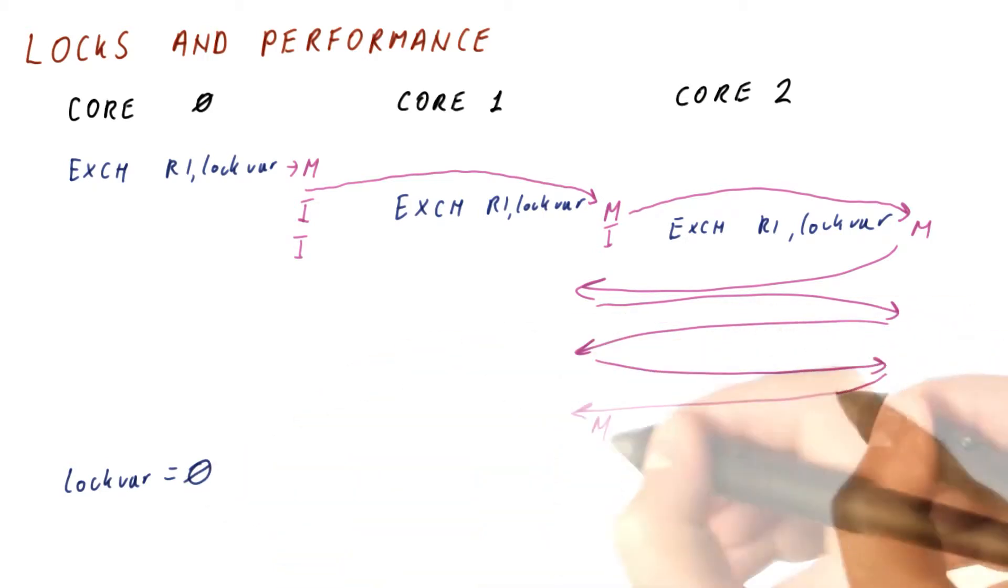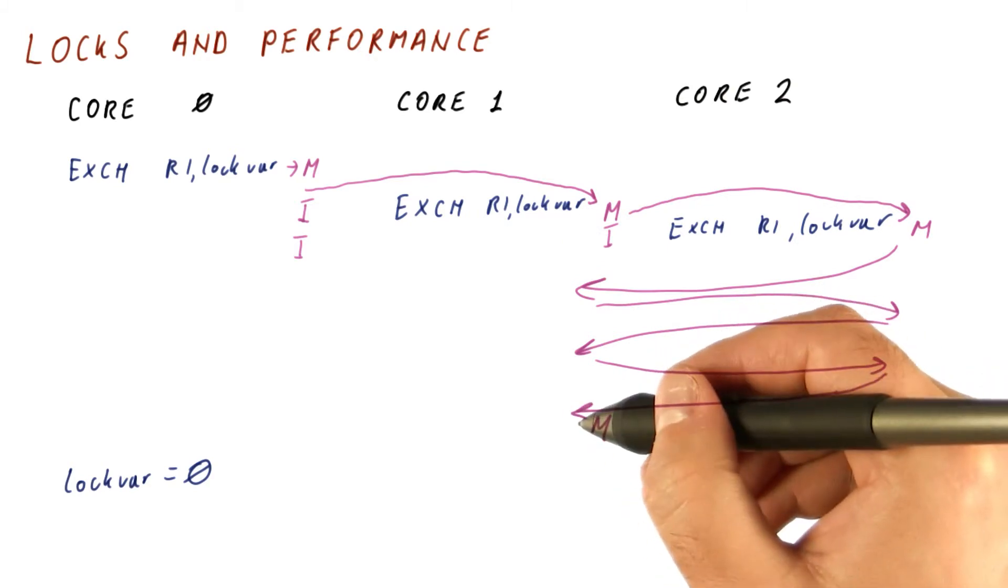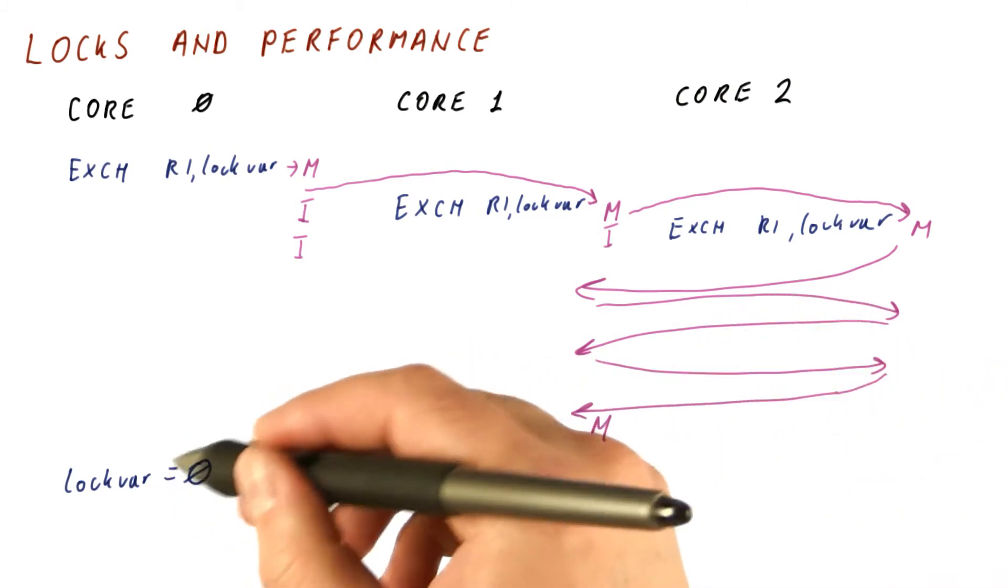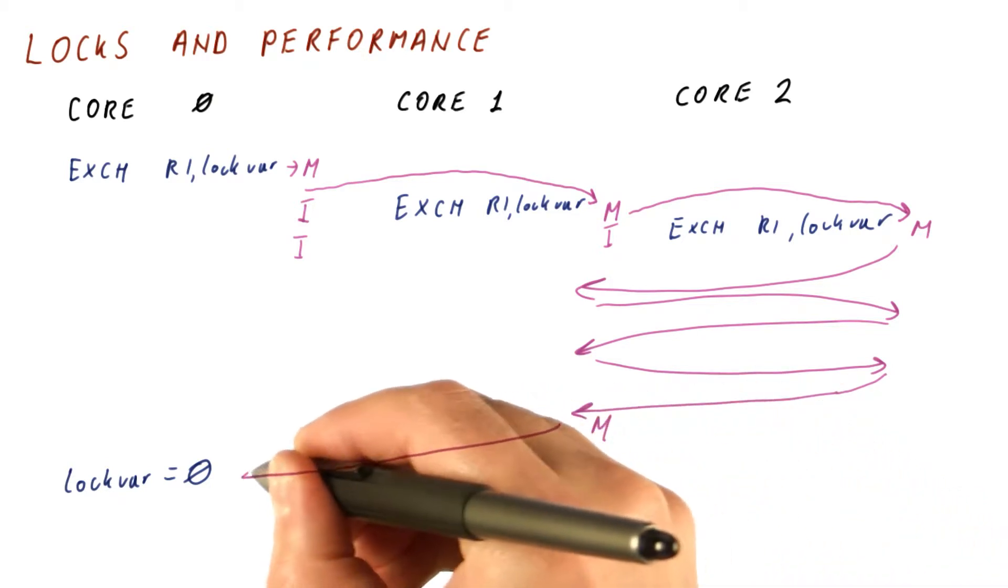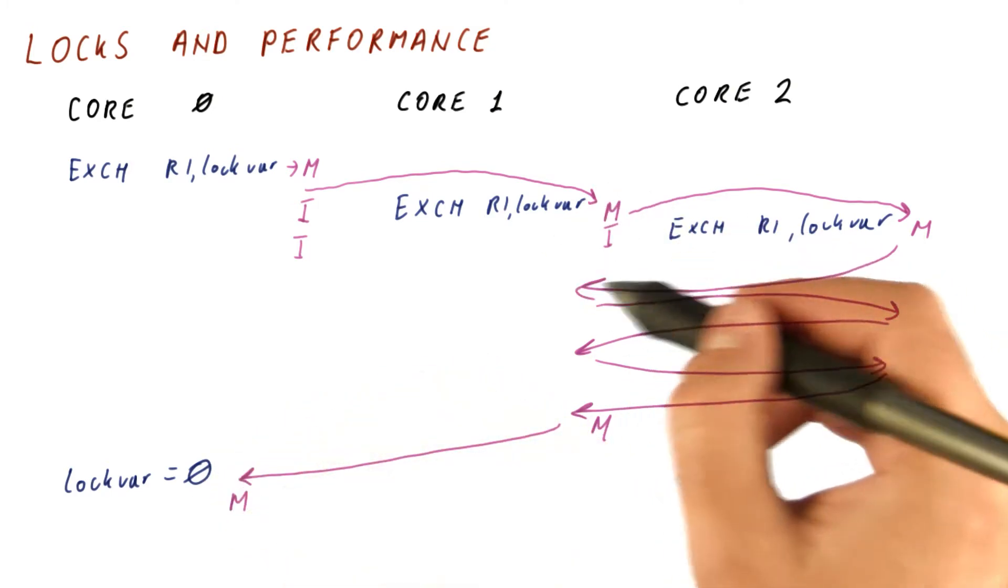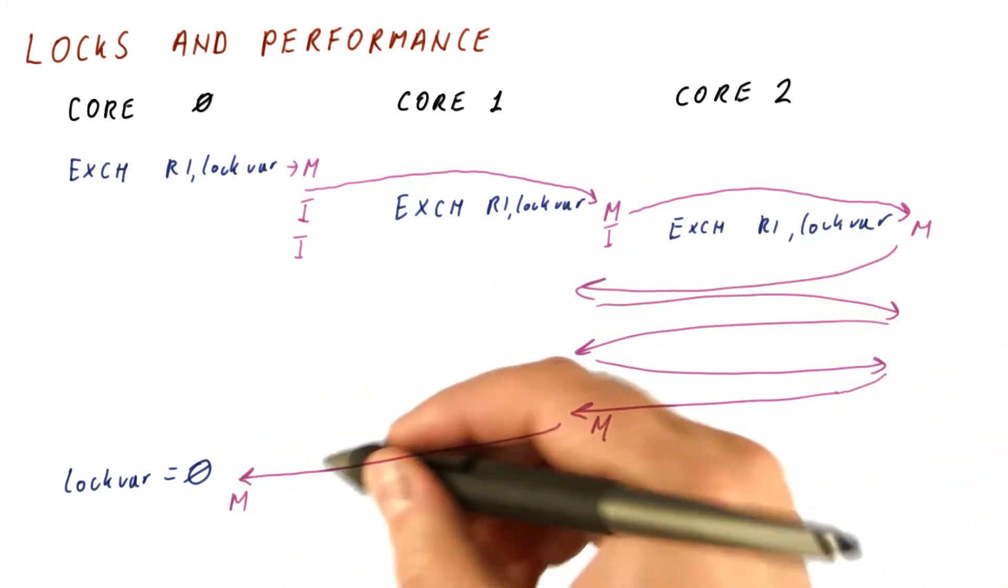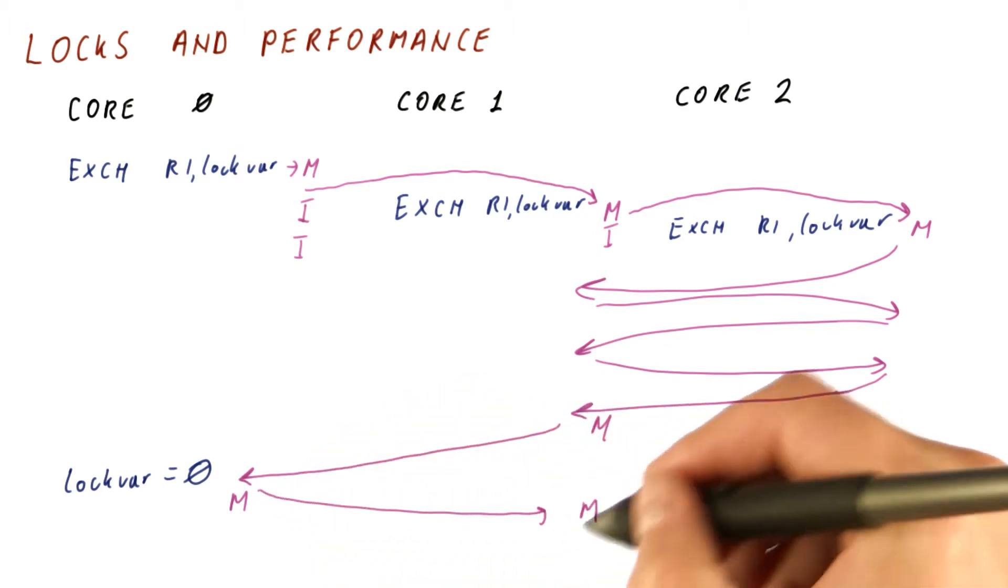So at some point, let's say that core one was the last one to grab the lock at the point where lock var is written to zero. This write will cause yet another movement of the block. It becomes modified in core zero's cache now. And now whoever tries to grab the lock first will succeed by obtaining the block, writing to it, but this time grabbing the lock.